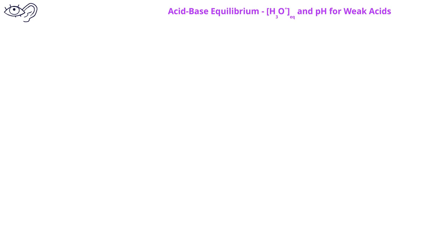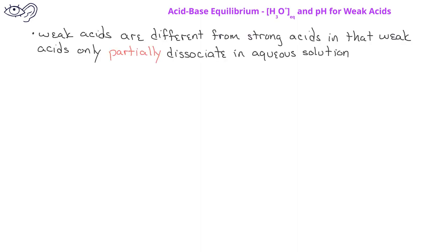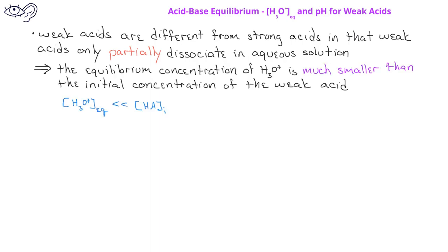In a previous video, we learned how to find the pH for a strong acid solution. In this video, we'll look at how to find the pH for a weak acid solution. It's important to begin by understanding that weak acids behave differently from strong acids in that they only partially dissociate in water. As a result, the equilibrium concentration of the hydronium ion is much smaller in weak acid solutions than it is in strong acid solutions.